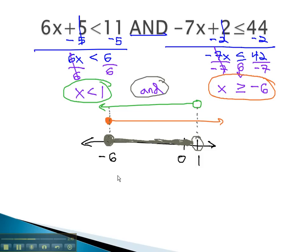We can express this in interval notation as well, negative 6 being the low number with a square bracket representing or equal to, and 1, the top number, with a curve bracket.